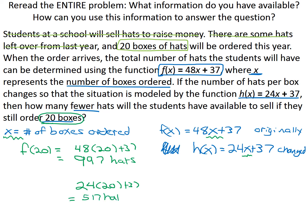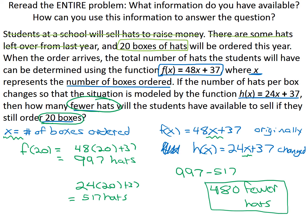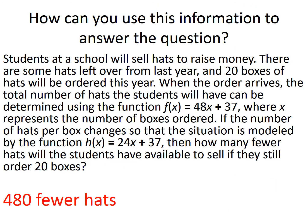And if I put 20 into the other equation, I get 24 times 20 plus 37. Typing that in: 24 times 20 plus 37 gives me 517 hats. So I took the value x equals 20 boxes, put it in both equations, and found that the first equation gives 997 hats and the second equation gives 517 hats. I can use that information to find out how many fewer hats will be available — all I have to do is subtract.